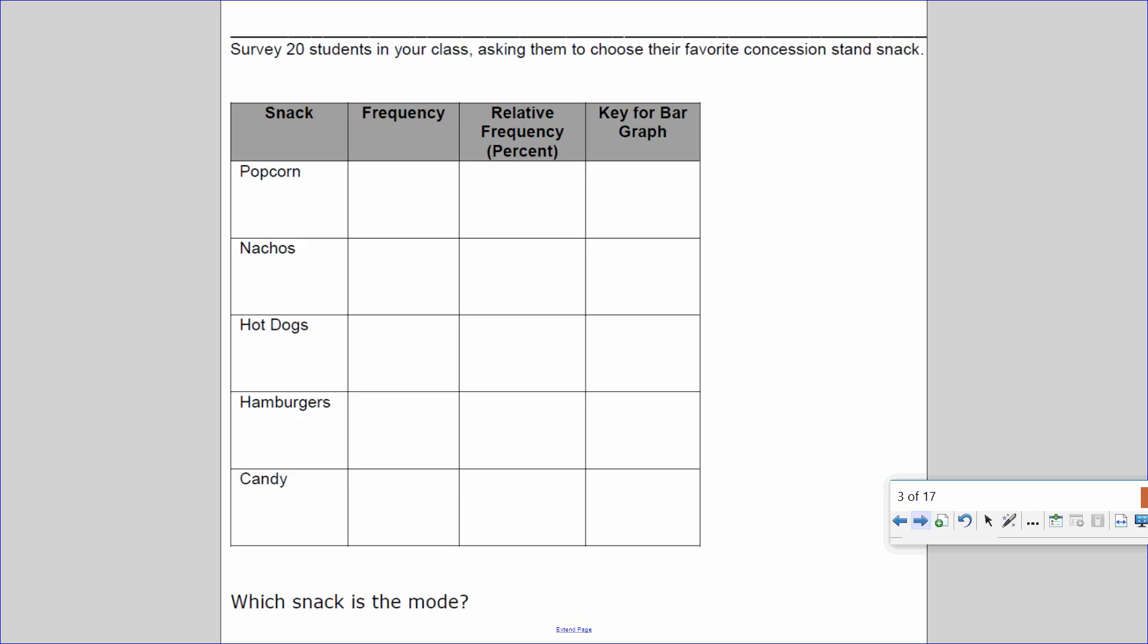So today, we are going to be doing a survey. We're going to be surveying 20 students in your class, asking them about their favorite concession stand snack. So let's pretend that five people chose popcorn, four people chose nachos, one person chose hot dog, eight students chose a hamburger, and two chose candy.